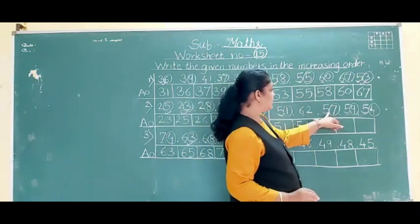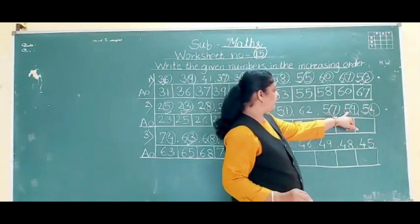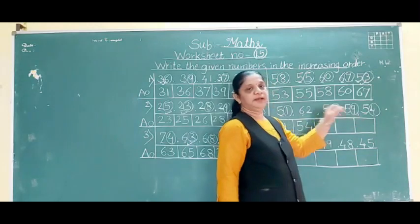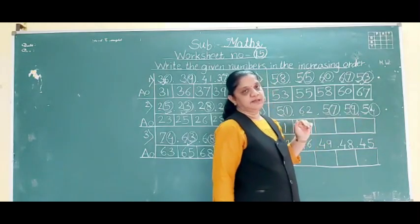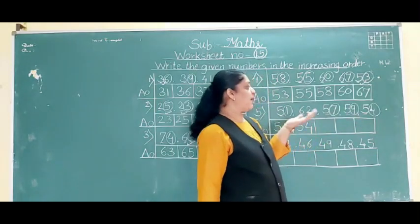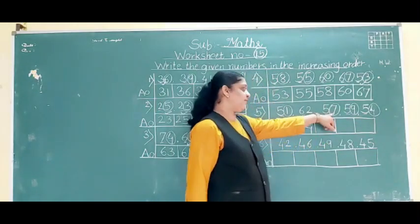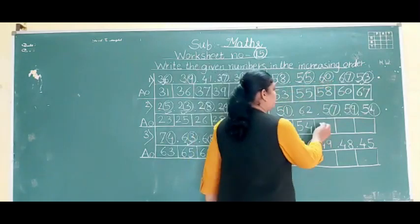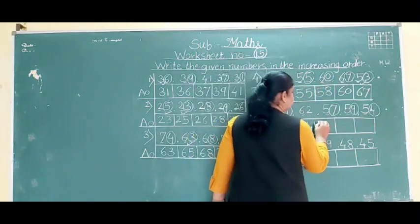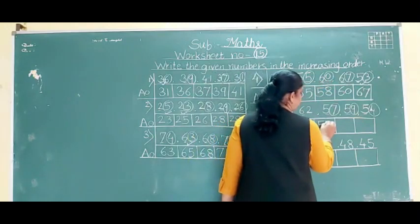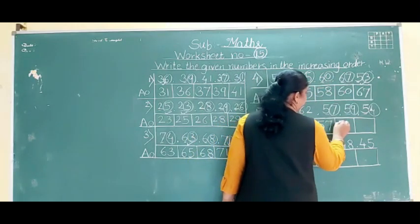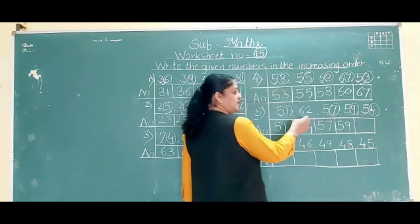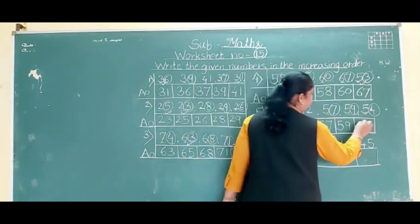Then 57 and 59 — 7 is above and 9 is below, so 57 is the small number, then 59. And last comes 62.